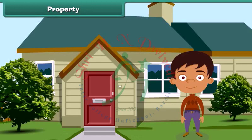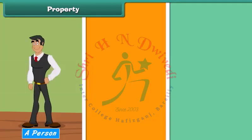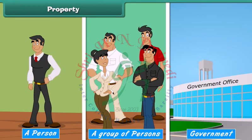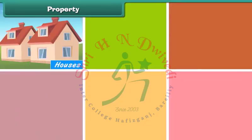Property is anything that is owned by a person, a group of persons, or the government. Houses are an example of property.